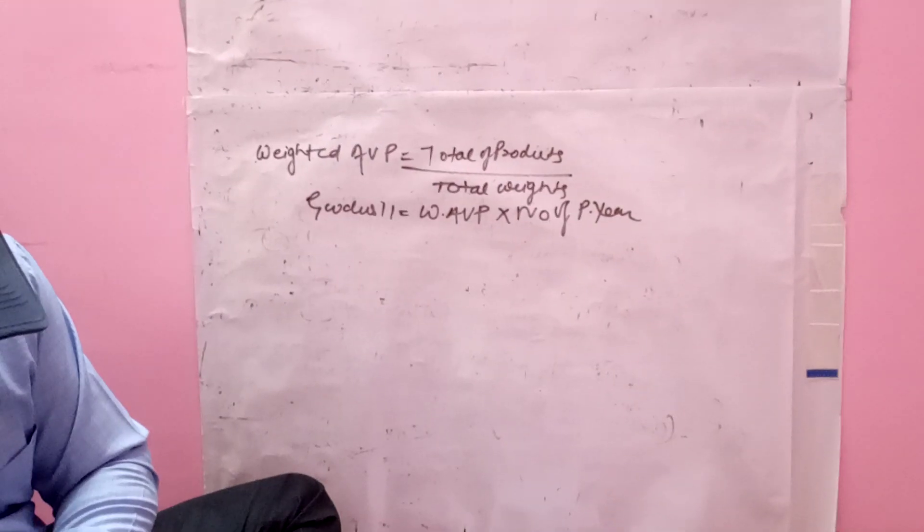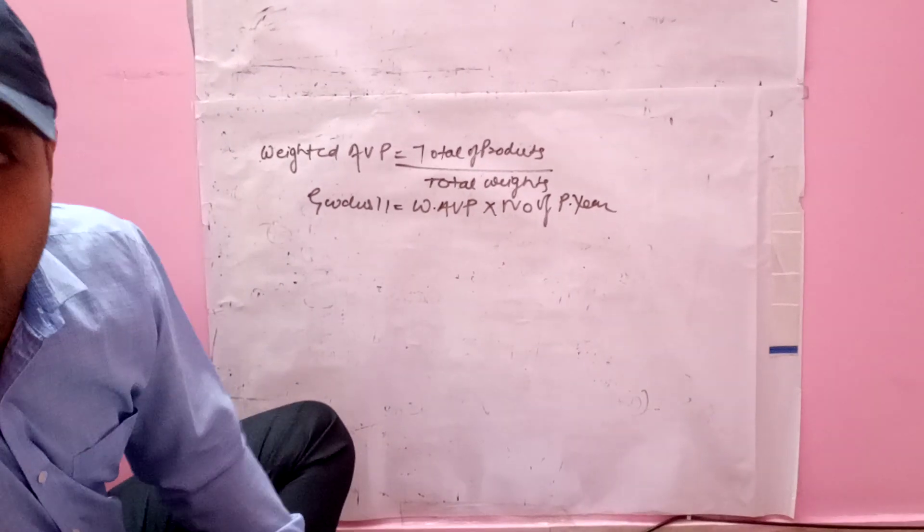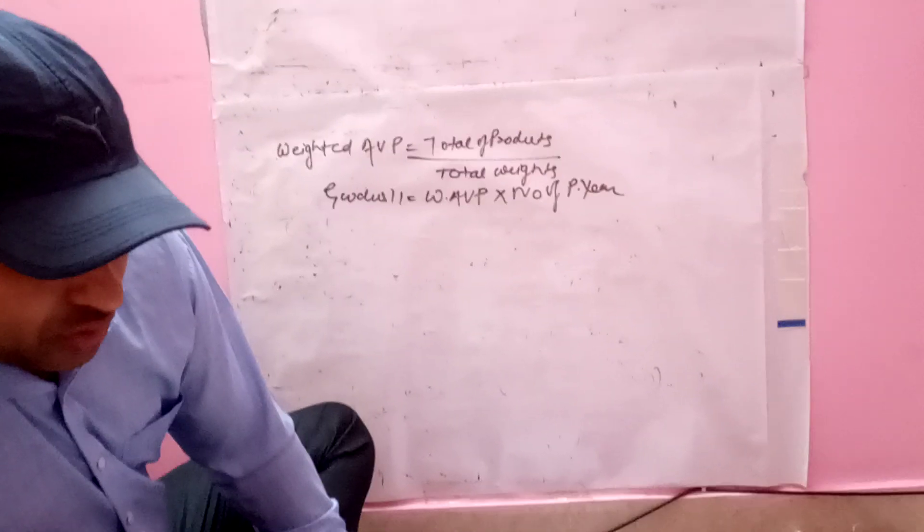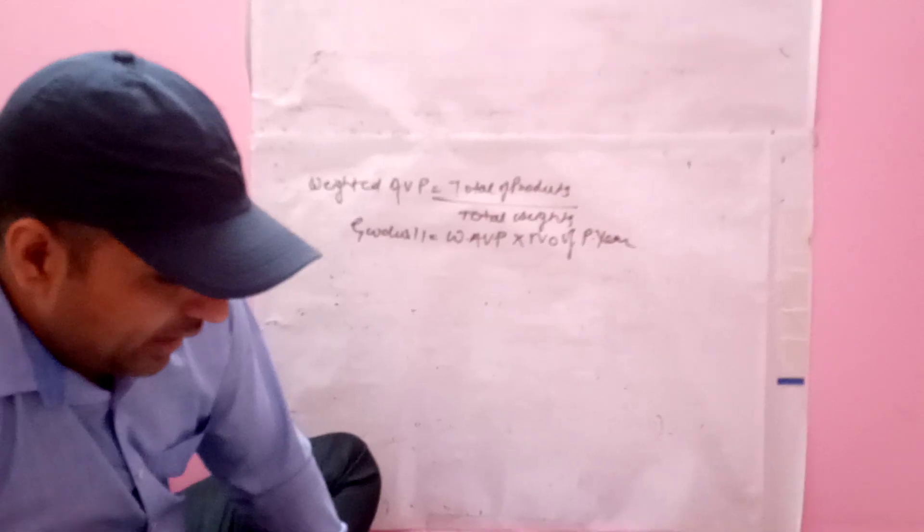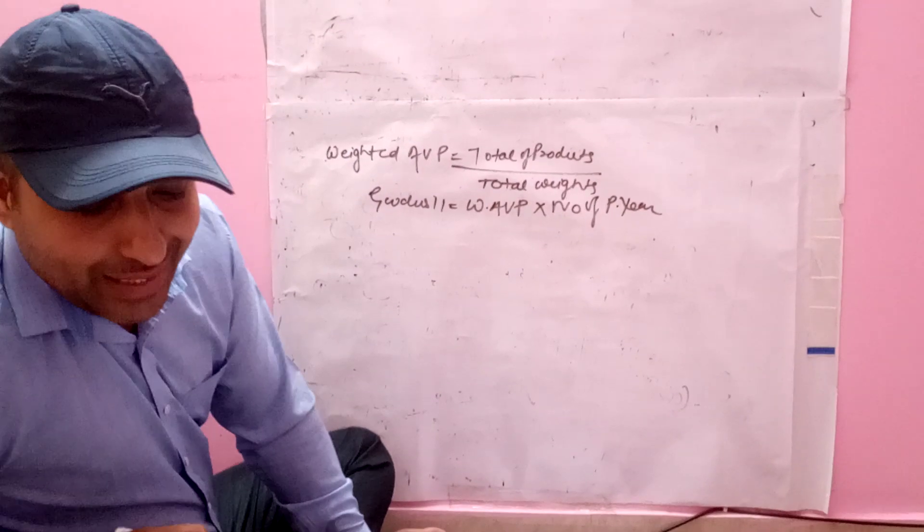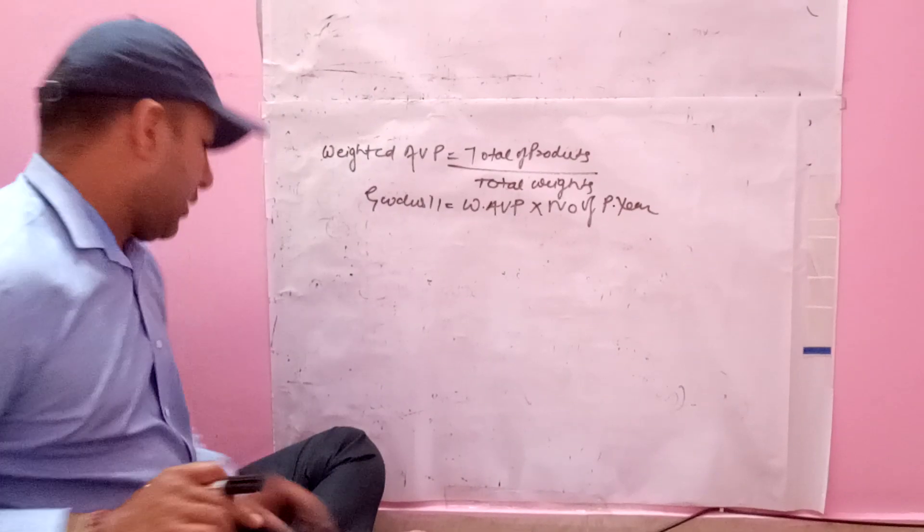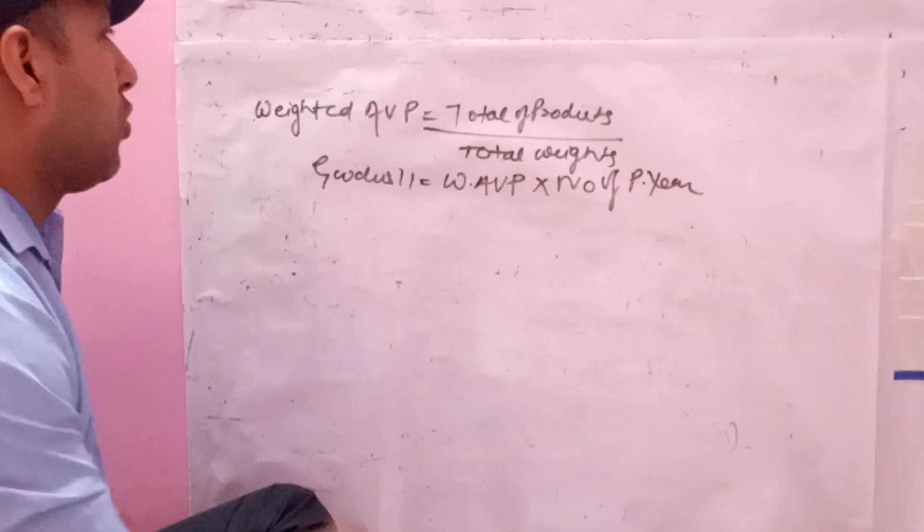Question number 5: The profit earned by a firm during the last four years is as follows. 2013: 80,000 rupees. 2014: 1 lakh. 2015: 1 lakh 10,000. 2016: 1 lakh 50,000.